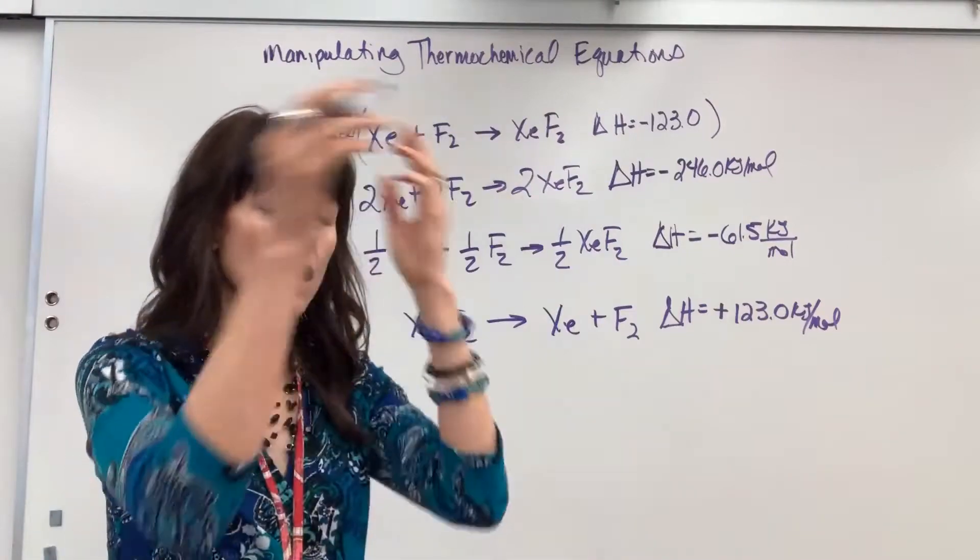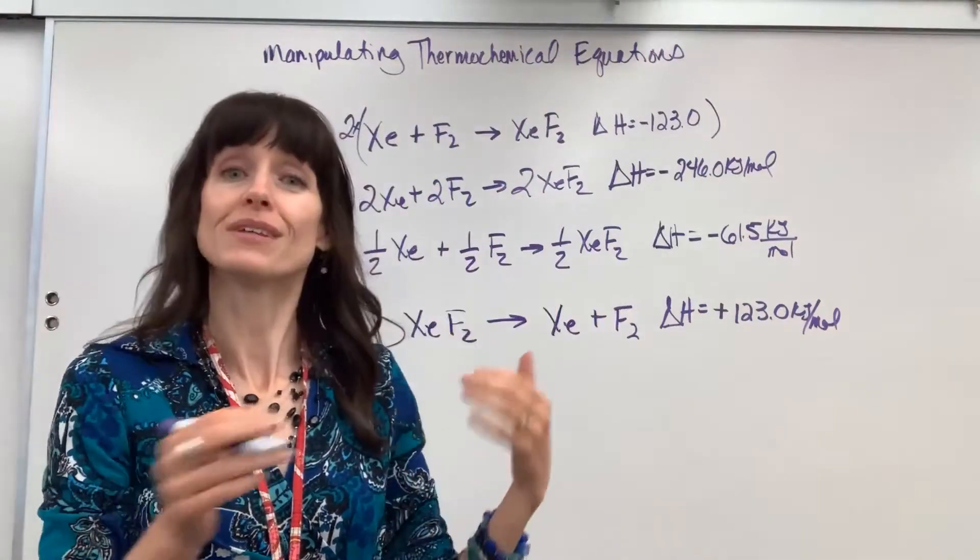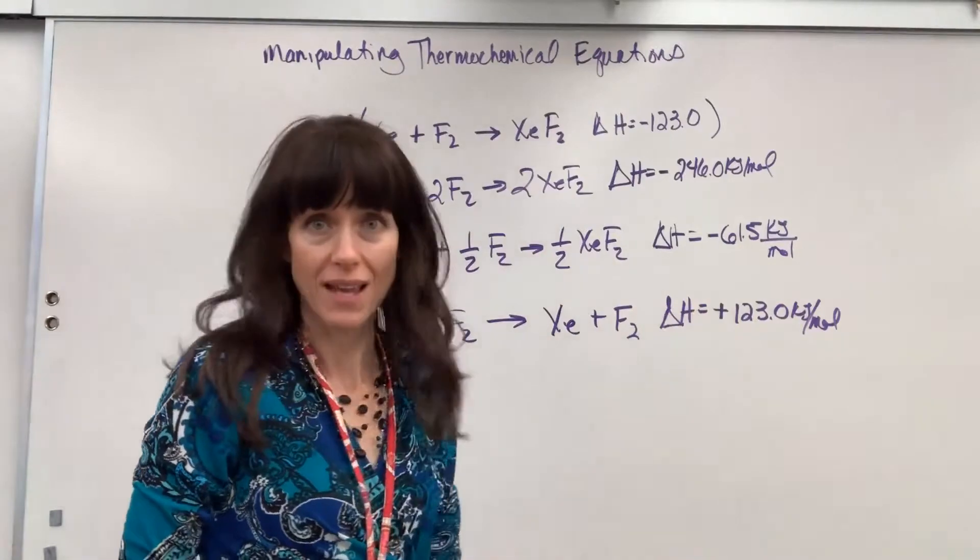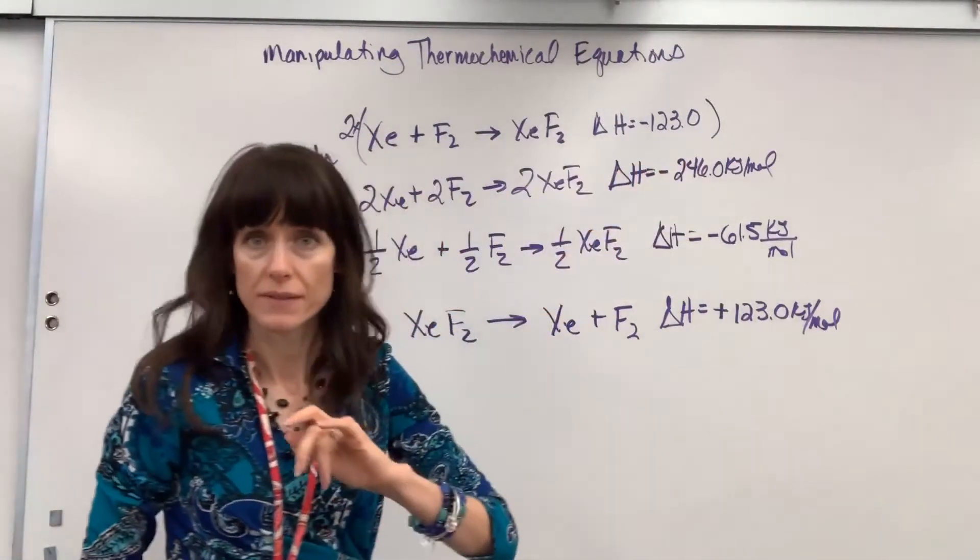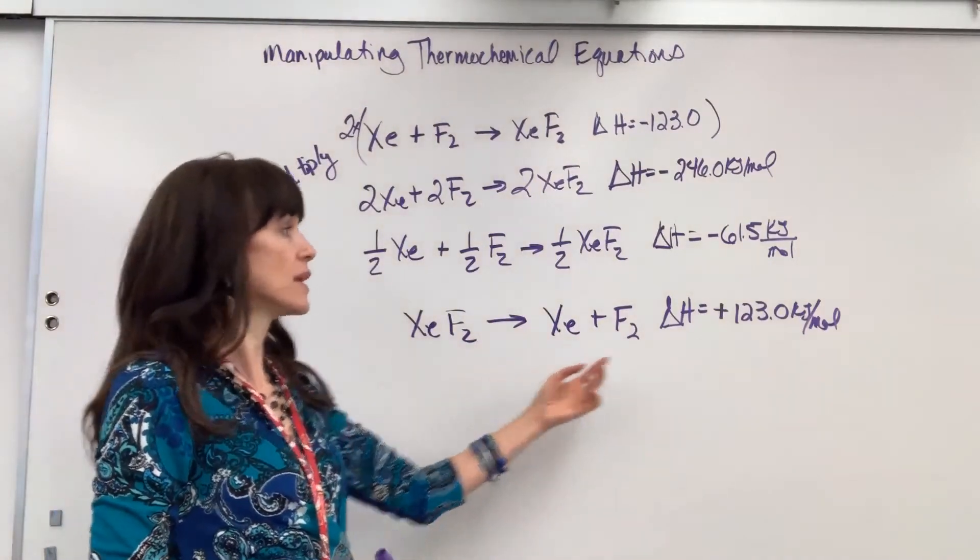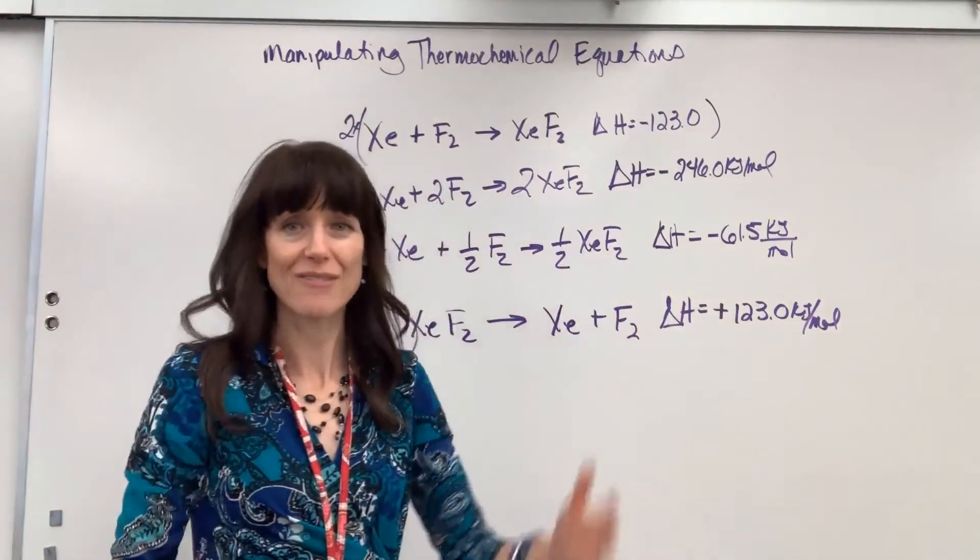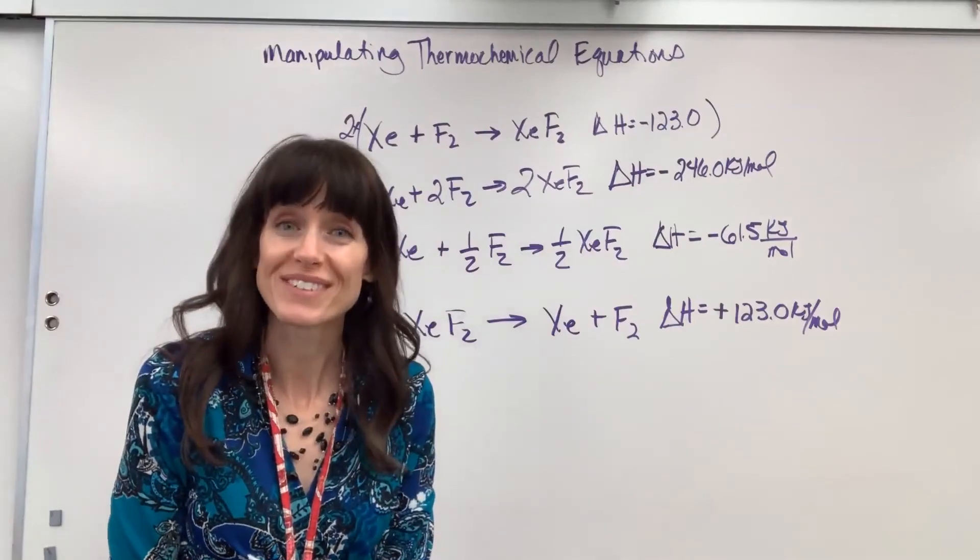So main umbrella, whatever you do to the chemical equation, do to delta H. If you multiply or divide, multiply or divide the delta H. If you reverse the reaction, you flip it, change the sign. There you have it, all the rules. Have a wonderful day.